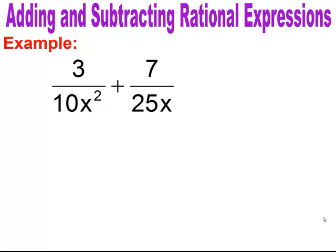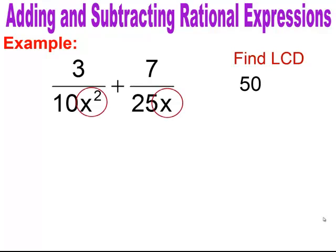In this next example, we do not have a common denominator, so we need to find the least common denominator. First, look at the numerical part — look at 10 and 25 and find the least common multiple. You can always use the ladder method when working with numbers. The least common denominator of 10 and 25 is 50. For the variable part, always use the variable with the highest exponent, which in this case is x squared. So the least common denominator is 50x squared.